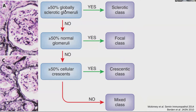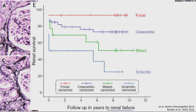These findings have prognostic implications in seropositive ANCA vasculitis. If more than 50% of glomeruli are globally sclerotic, you call it sclerotic class. If more than 50% are normal, it's focal class. If more than 50% have crescents, it's crescentic class. Mixed class applies when less than 50% fall into any single category. At five years, renal survival is 93% in focal class versus 51% in sclerotic class, with crescentic and mixed classes in between.